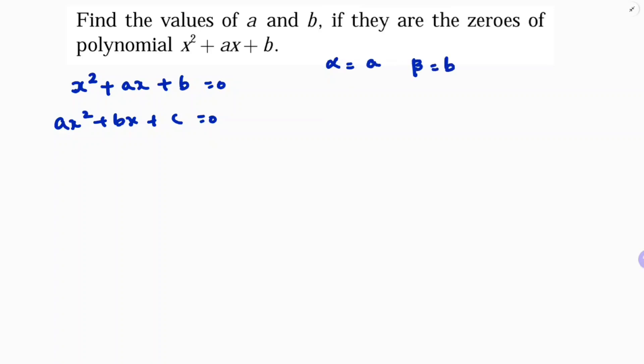Beta is b, given because these are the zeros. In the question, it's clearly given a and b are only the zeros. Now if we compare with the standard equation, the value of a is one, b is a, c is b. Now do product of the zeros.